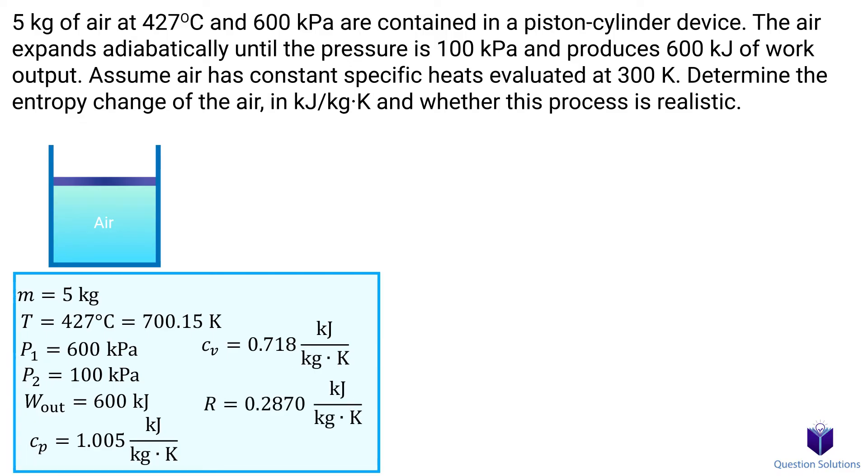We can find the entropy change of the air using this equation, since we're given initial and final pressure. We have everything except for the final temperature value. So how can we find that?